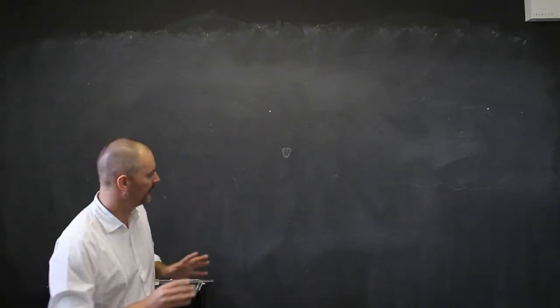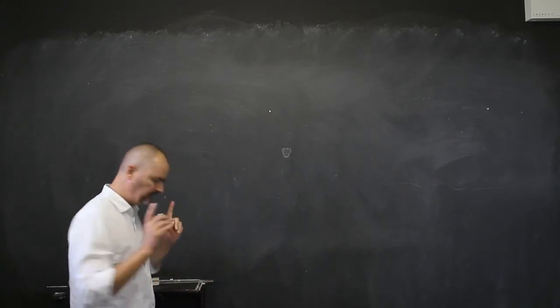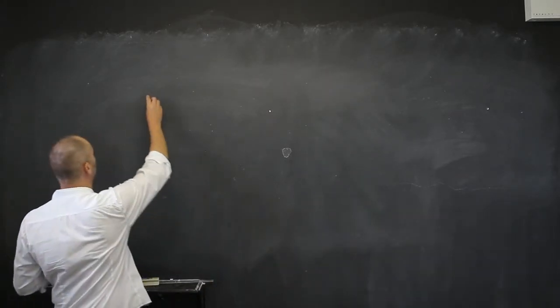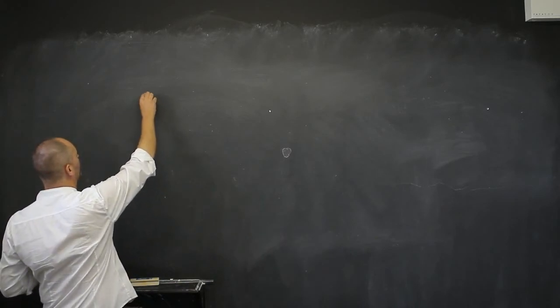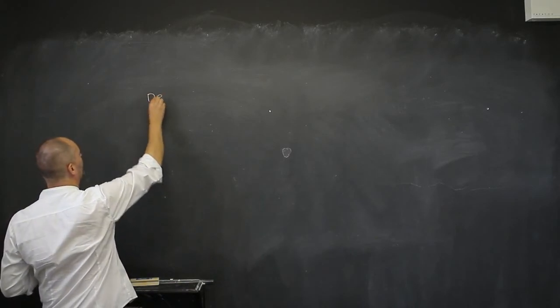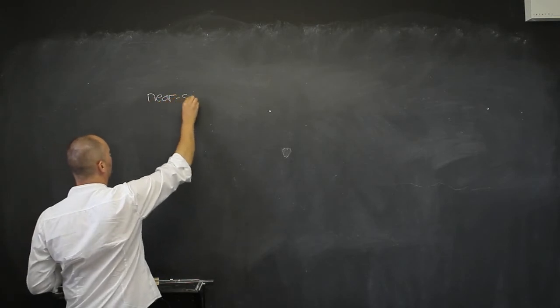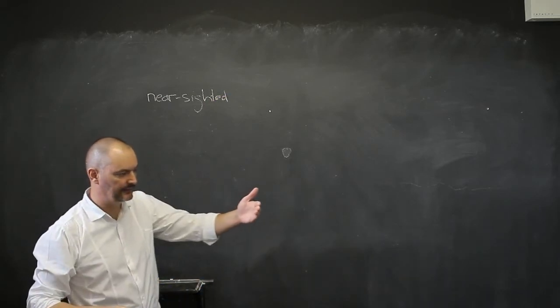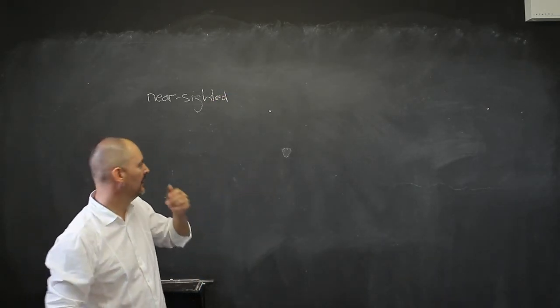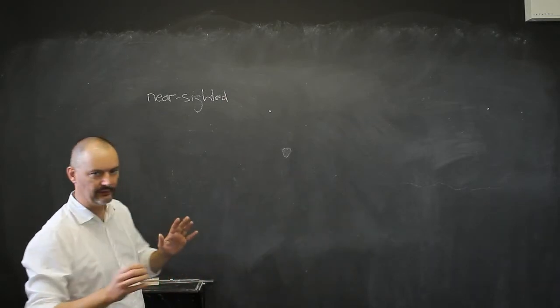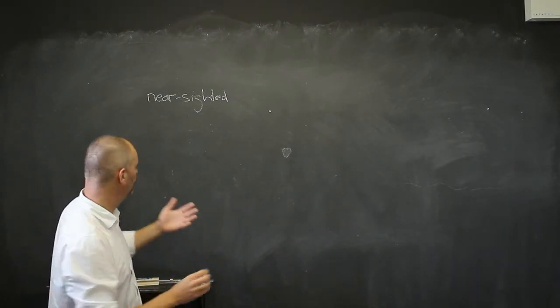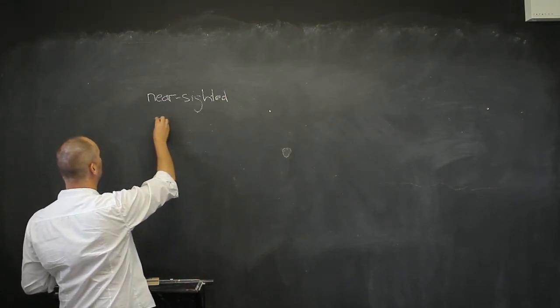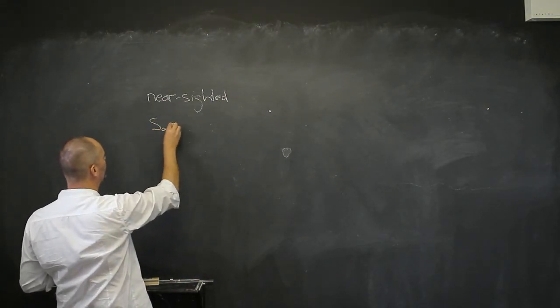Now we know something about the near point. Let's discuss two situations, two problems, so that we can just bring this into a bit of practical use. What if we have a near-sighted person? What does near-sighted mean? You can only see close by. You can only see things in focus near to the eye. So let's say for instance, the furthest away that this person can focus is 80 centimeters.